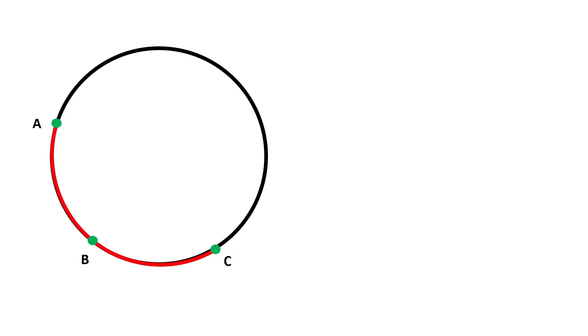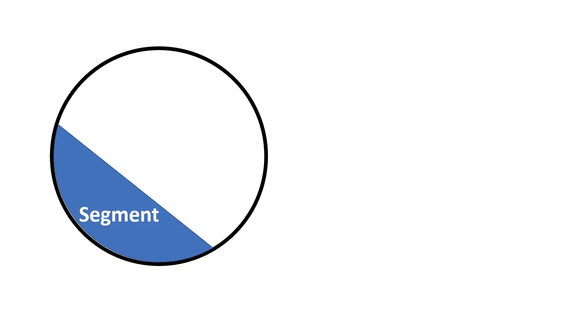A segment is a figure formed by an arc and the chord joining the end points of the arc. This is arc A-B-C, and this is the chord joining the two end points of the arc. So this is the segment — the shape formed by the arc and the chord that joins the end points of the arc.